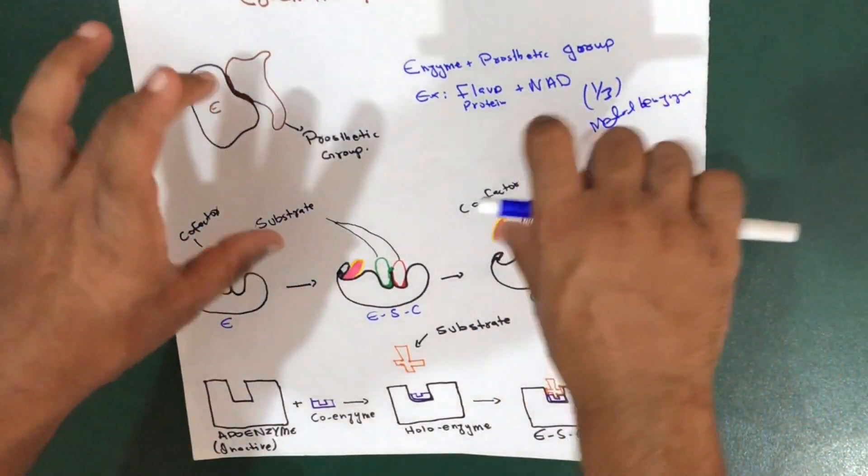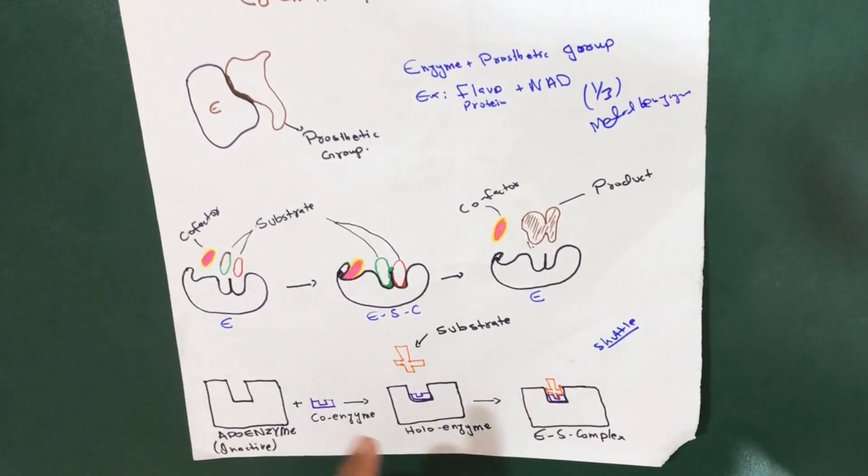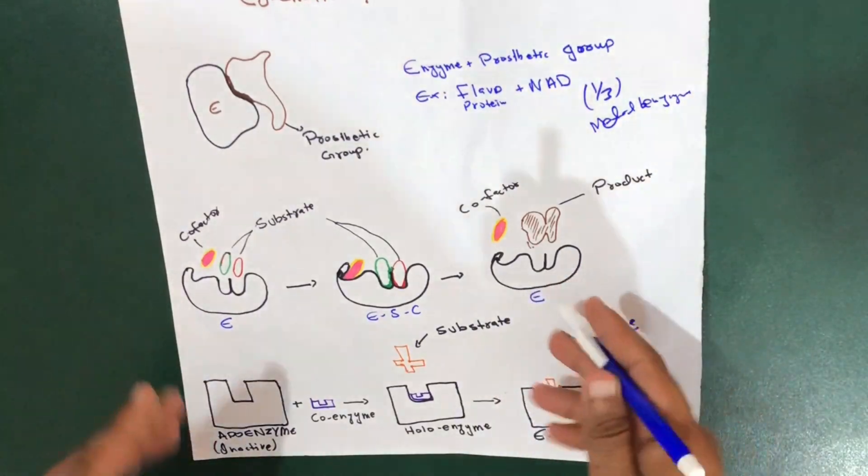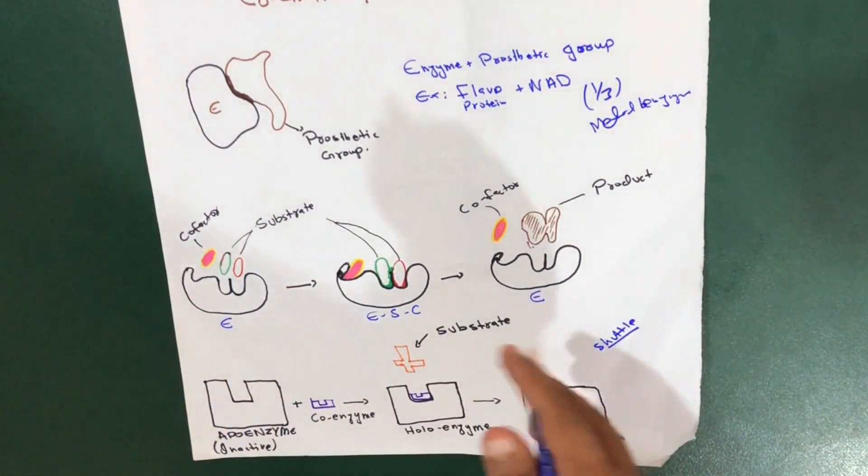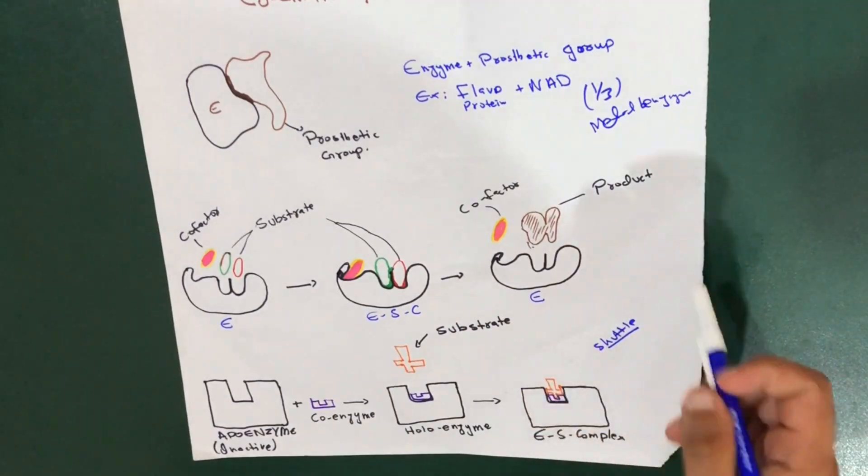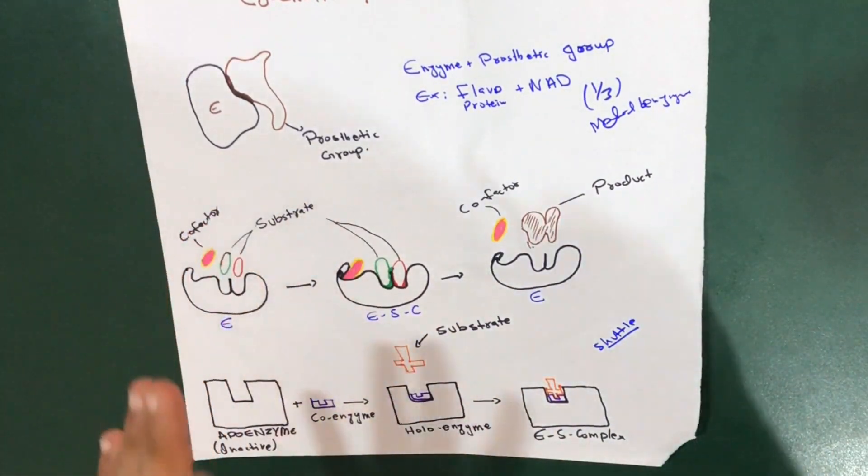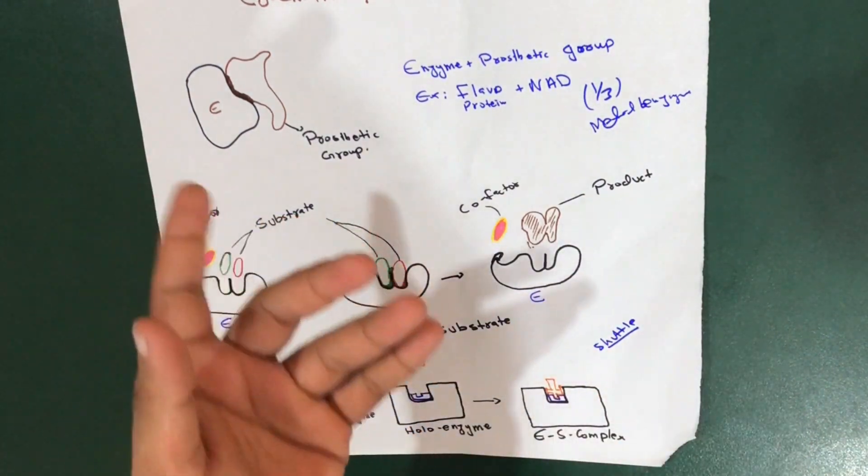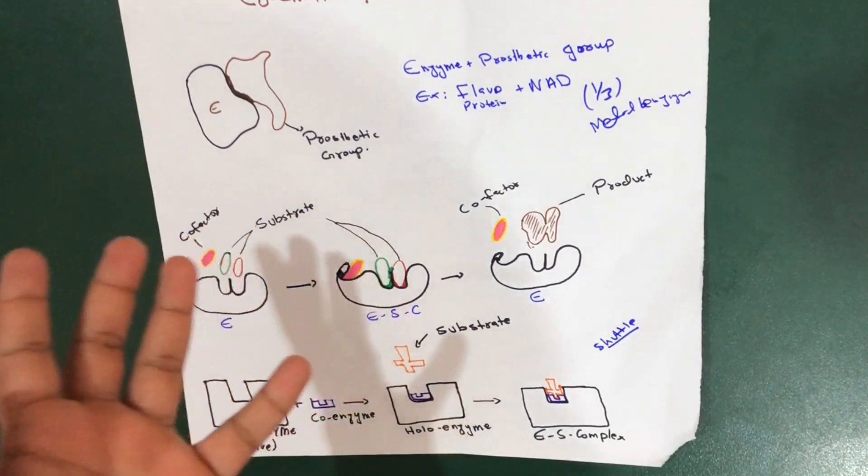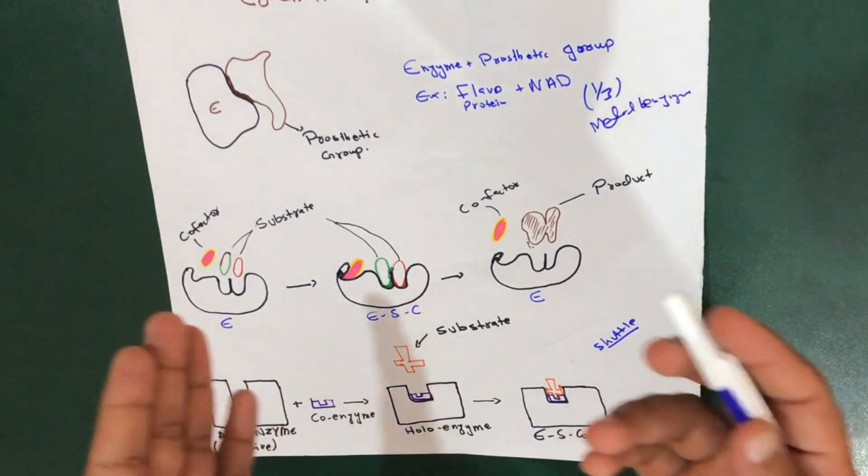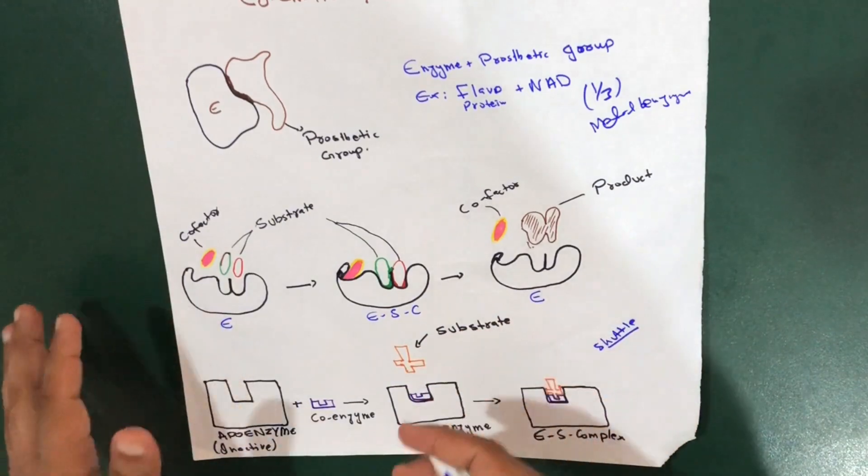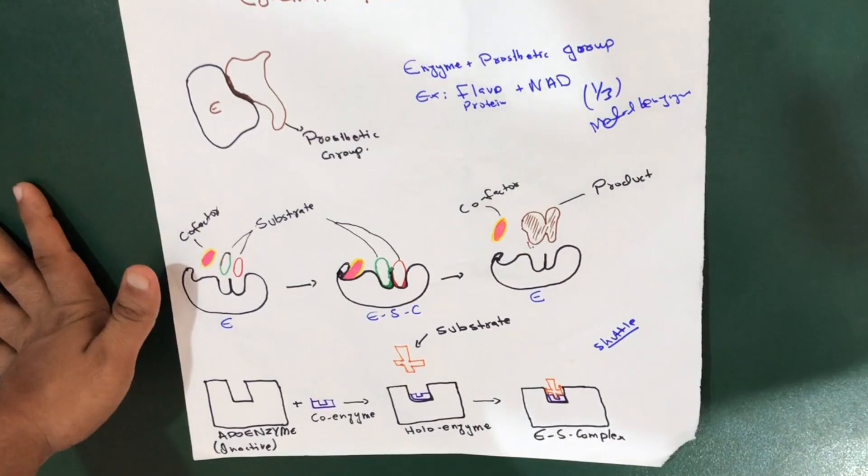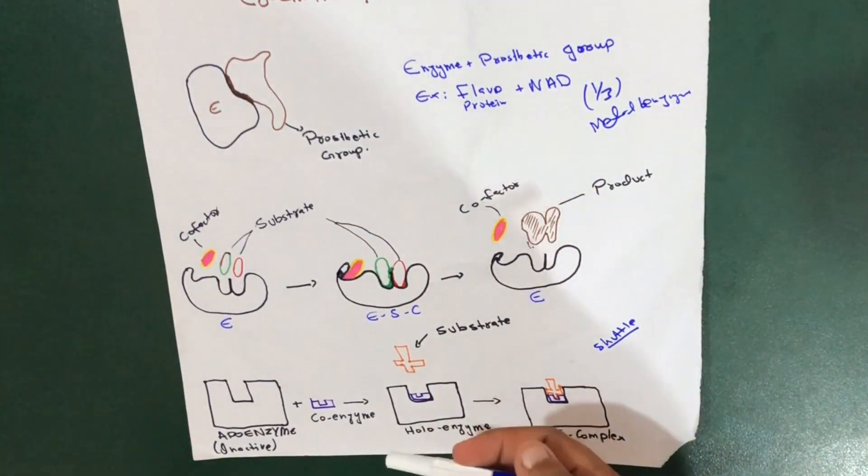Just to grasp the idea of prosthetic group, coenzyme and cofactors in this video. Now let's talk about cofactors. Cofactors are similar, they function in a similar way, but they have little or no difference at all. Cofactors are non-protein inorganic substances. According to some websites, they are also organic, but if you follow the textbook, if you are a medical student, you would be confirmed that they are only inorganic substances.